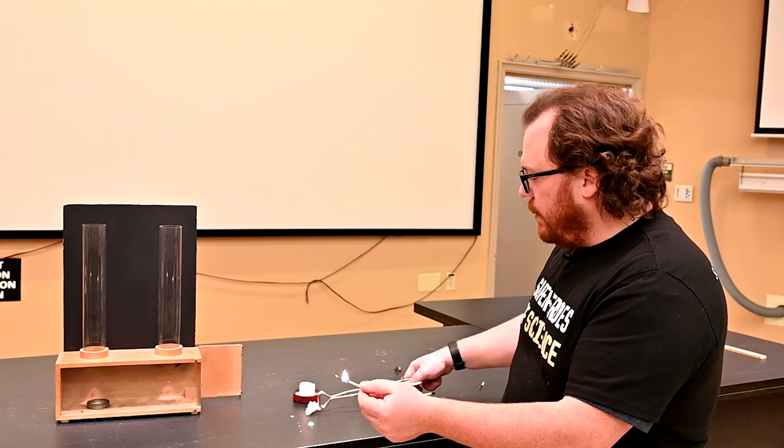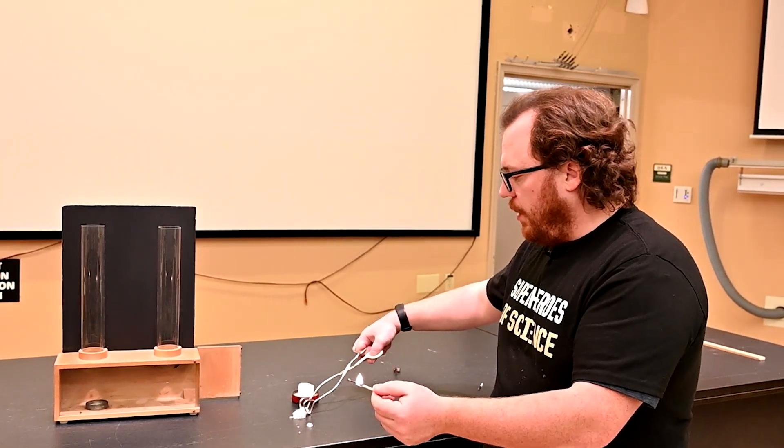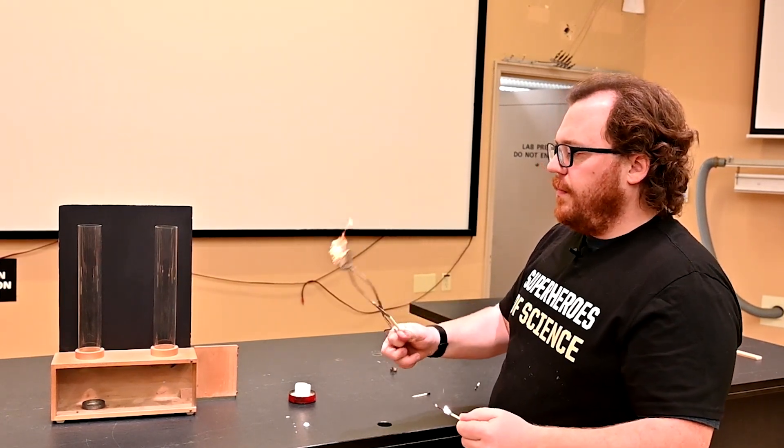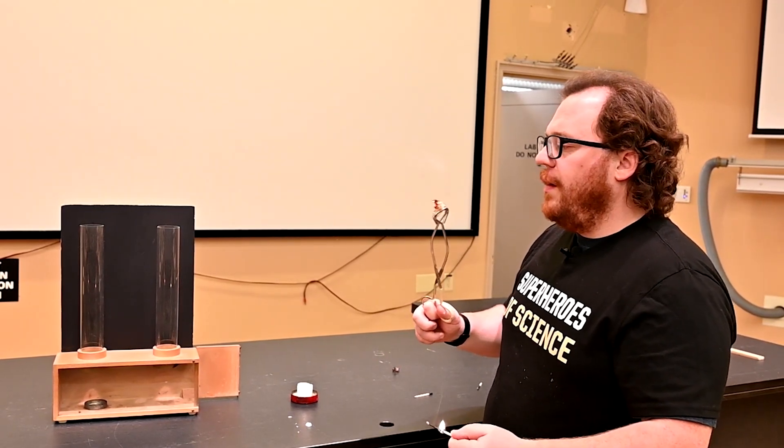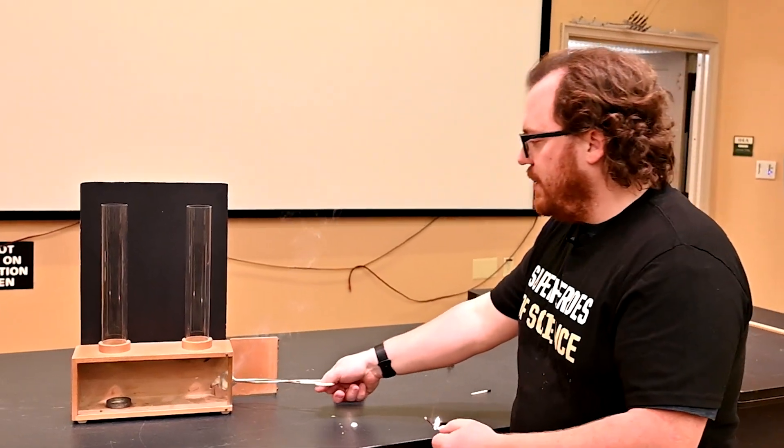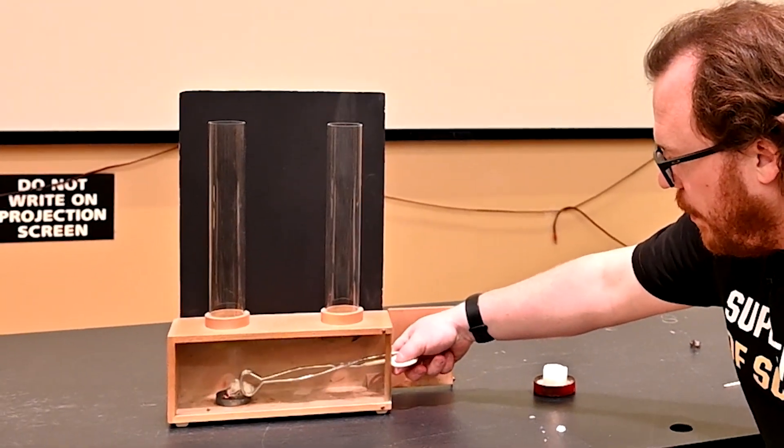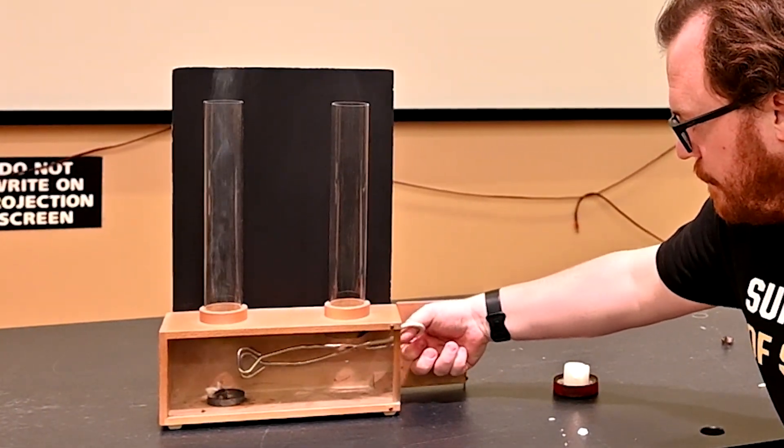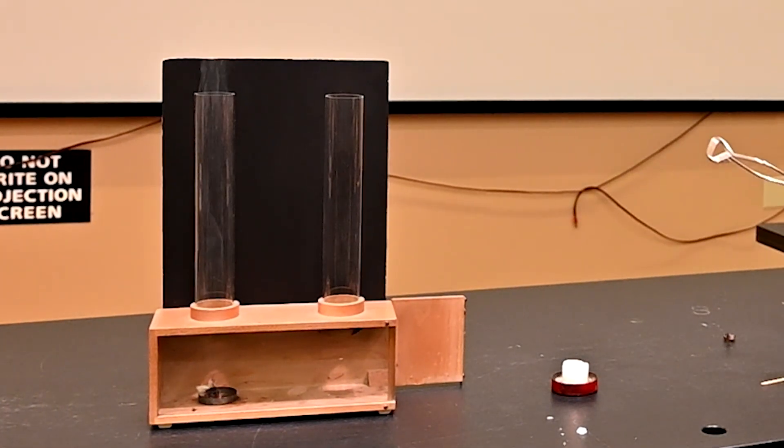What we're going to do is I'm going to light this cheesecloth on fire and then blow it out so that it produces a lot of smoke. And we can see that smoke coming out of our chimney.